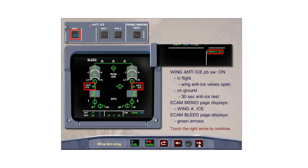With the wing anti-ice push-button switch selected on, the wing anti-ice valves open, the message wing anti-ice appears in the ECAM memo section, and the ECAM bleed page displays green arrows. On the ground, selecting the wing anti-ice push-button switch on will initiate a test of the wing anti-ice valves for 30 seconds, then the anti-ice valves will close.